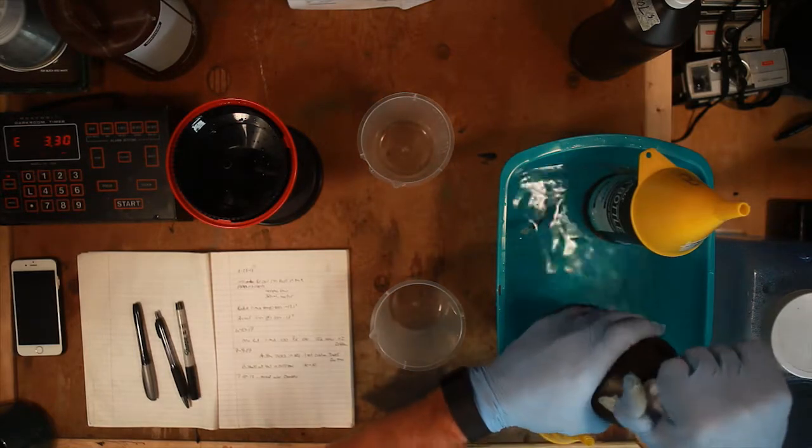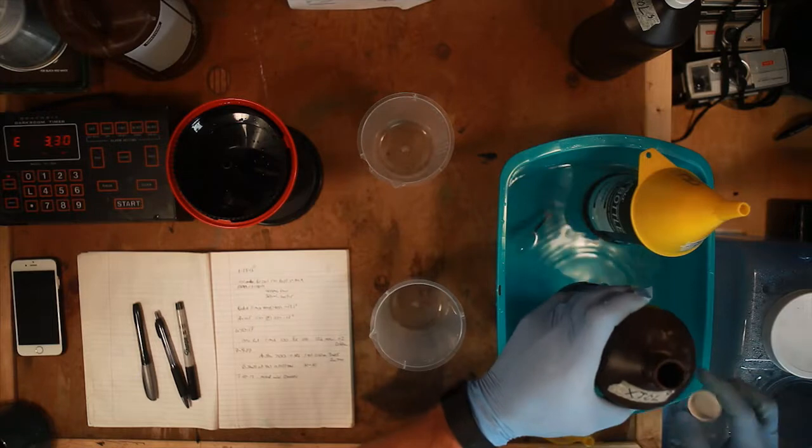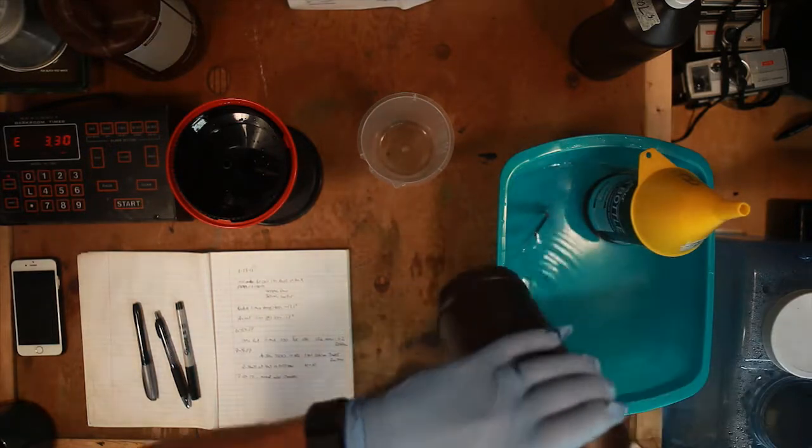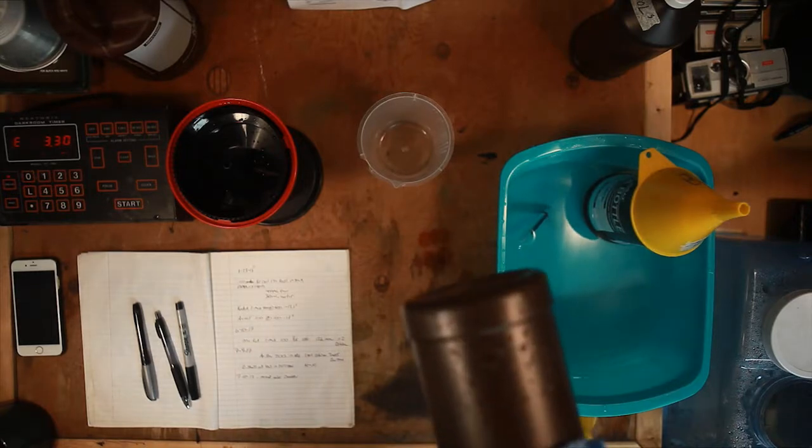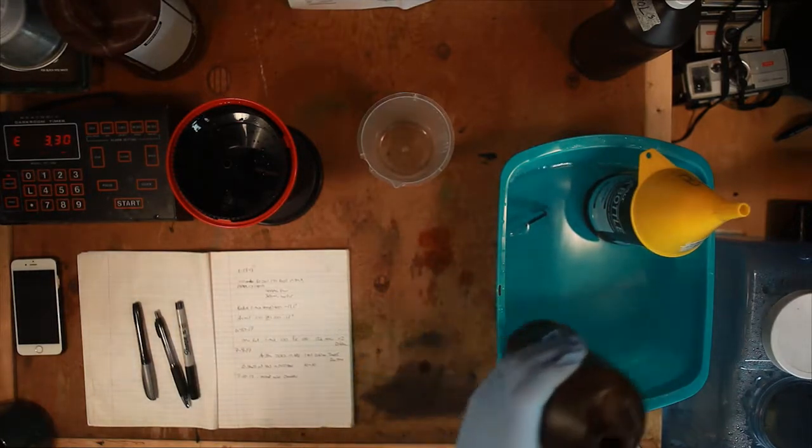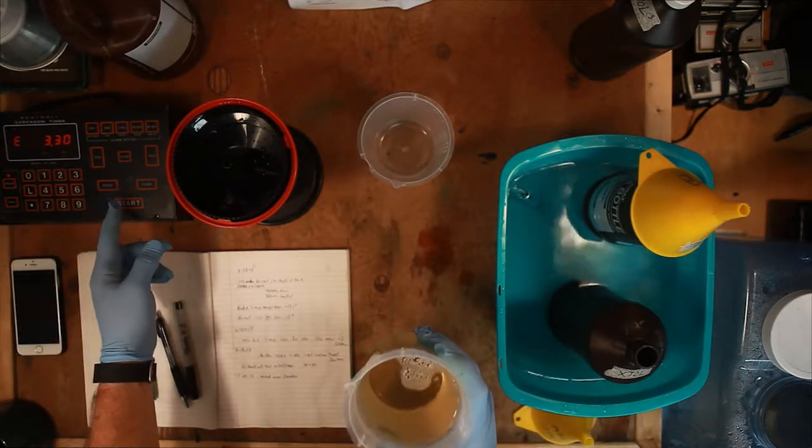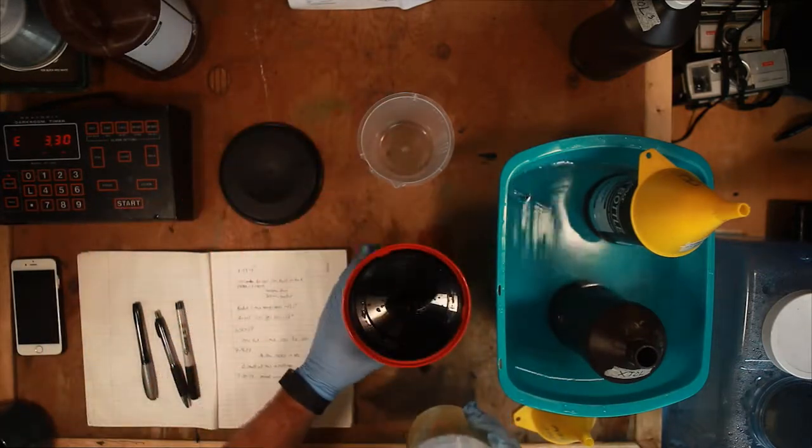Since we're using a regular Patterson tank and we're working with a roll of 120, we know that we need 500 milliliters. We'll measure that out quick. We got three and a half minutes on the clock so we'll pour this in and hit start and get going.